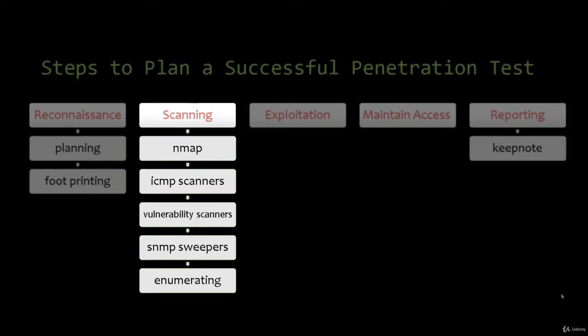Some common tools used in the scanning phase are ping, traceroute, SuperScan, Netcat, and Nmap. Enumeration is an important aspect of this phase. The goal of enumeration is to paint a fairly complete picture of the target — identifying valid user accounts or poorly protected shared resources using directed queries or active connections.